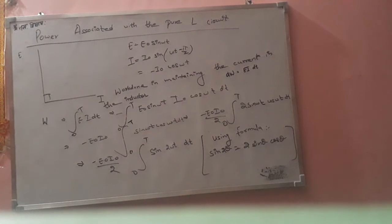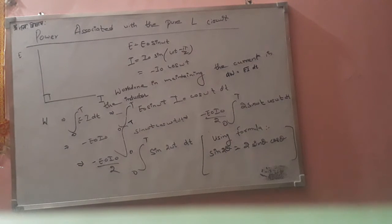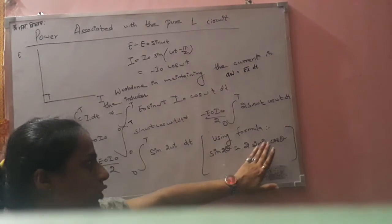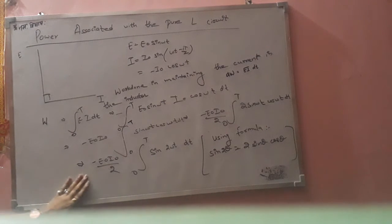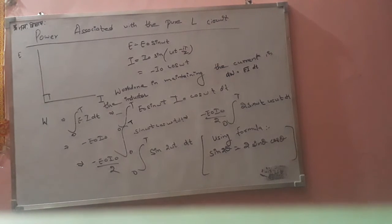That is equal to minus E-naught·I-naught by 2, times the integration from 0 to T of sin(2·omega-t)·dt. Using the simple trigonometry formula: sin(2-theta) is equal to 2·sin(theta)·cos(theta), so 2·sin(omega-t)·cos(omega-t) becomes sin(2·omega-t).